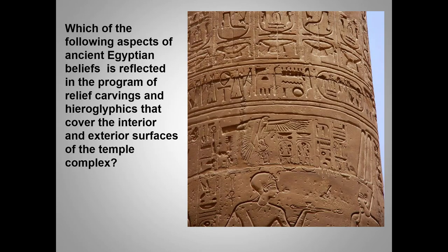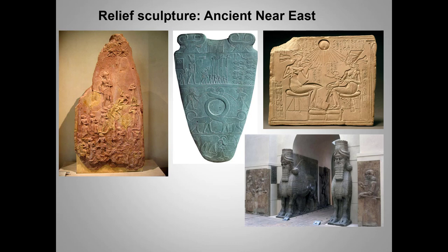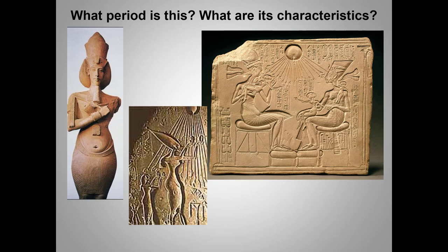Think about the relative roles of the pharaoh, the priests, and the ordinary people. The label on the clue image reads: 'Pharaoh Ramses II carrying an offering to the god Amun.' What are the characteristics of relief sculpture in the ancient Near East? What devices are used to show narrative and indicate an individual's importance? What are the names for the three kinds of stone relief encountered so far?